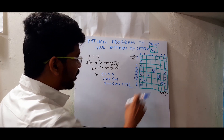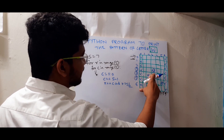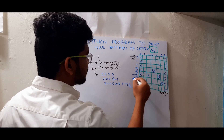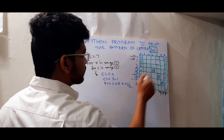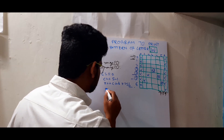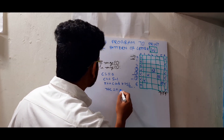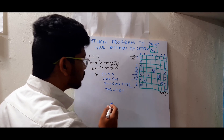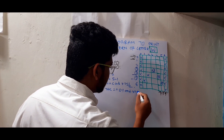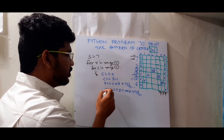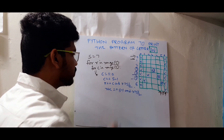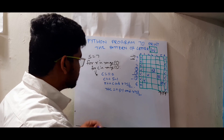And one more condition is left. If you see: this is 4 and this is 2, 4 plus 2 is 6. This is 5 and this is 1, 5 plus 1 is 6. 6 and 0, 6 plus 0 is 6. So that means row plus column == S minus 1, and row should also be greater than S divided by 2. So row plus column equals S minus 1, and row greater than S by 2.